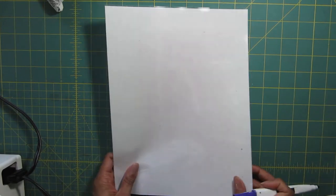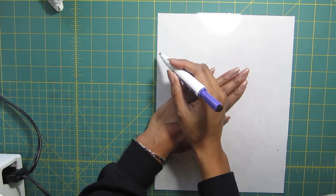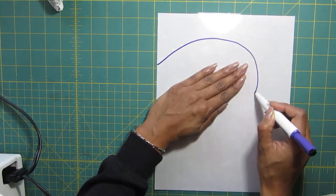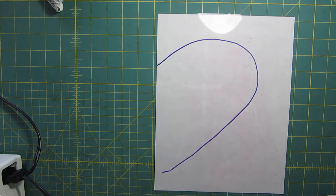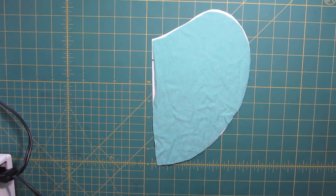To make the pocket pattern, place your hand on a piece of paper and draw around your hand. You want the pocket to be big enough for your hand to fit in. The shape is like half of a heart. This is the final pocket pattern.